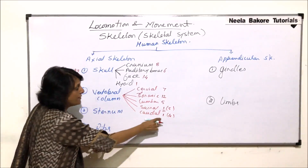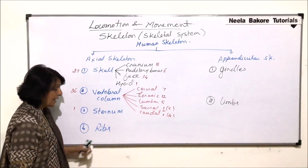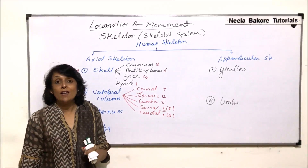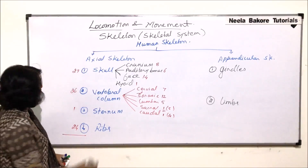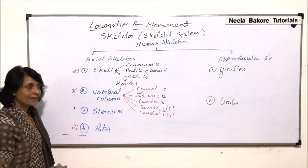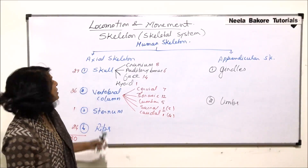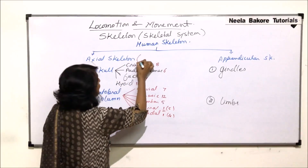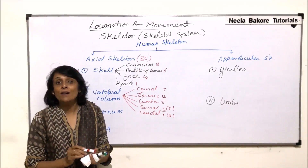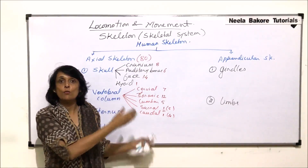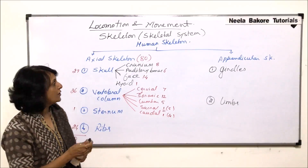The sternum, or breastbone, is only one bone. Ribs come in twelve pairs, giving twenty-four rib bones. Adding all parts of the axial skeleton — skull twenty-nine, vertebral column twenty-six, sternum one, ribs twenty-four — gives a total of eighty bones. So our axial skeleton is made up of eighty bones. We know the body has two hundred and six bones in total, so we need to account for the remaining appendicular bones.